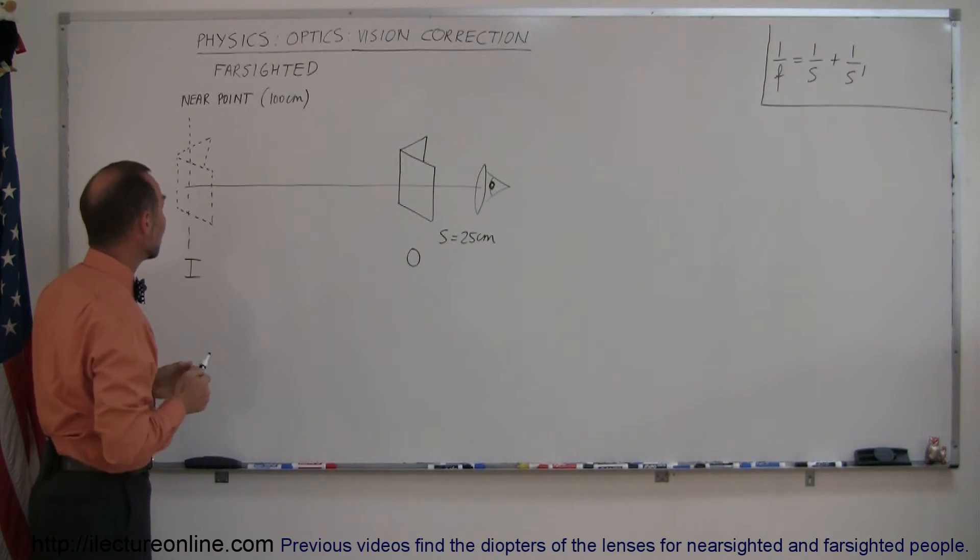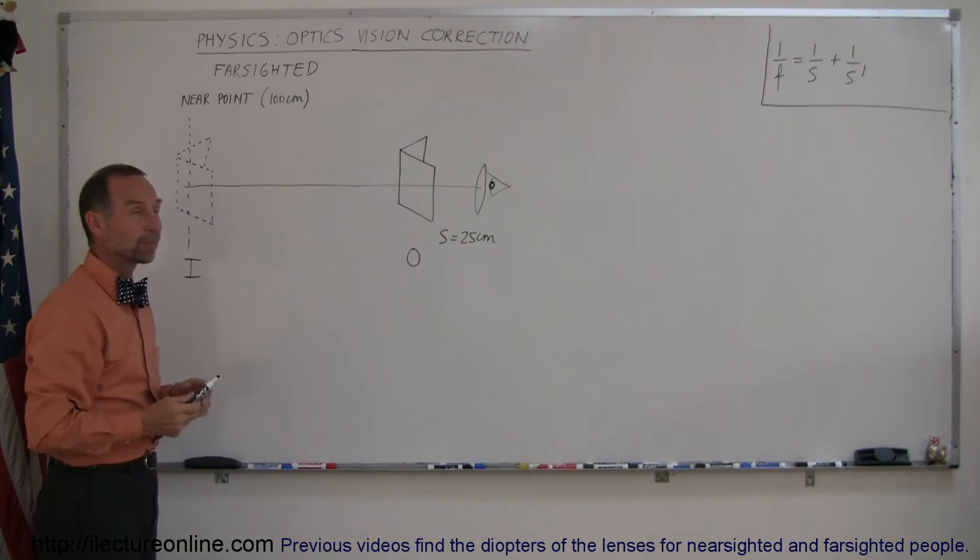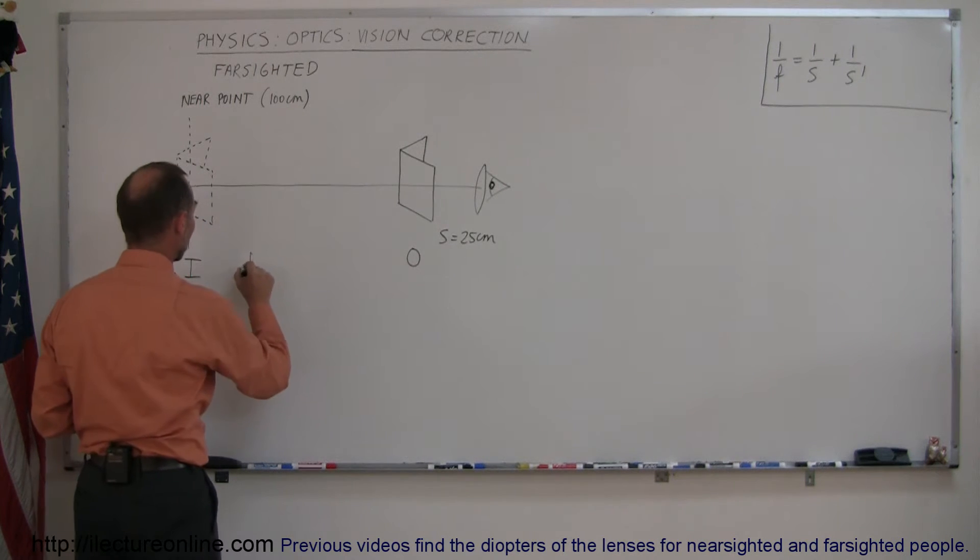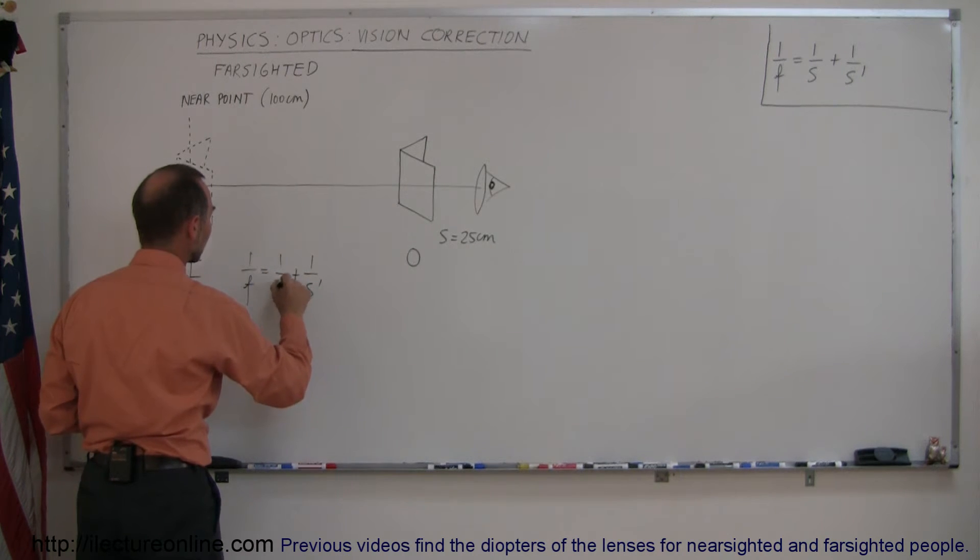It needs to be in order for you to be able to see an image 100 centimeters away. Using our lens equation, we can say that 1 over f equals 1 over s plus 1 over s prime. This should be an s right there.